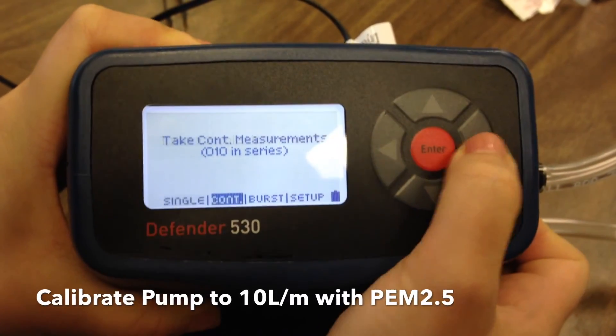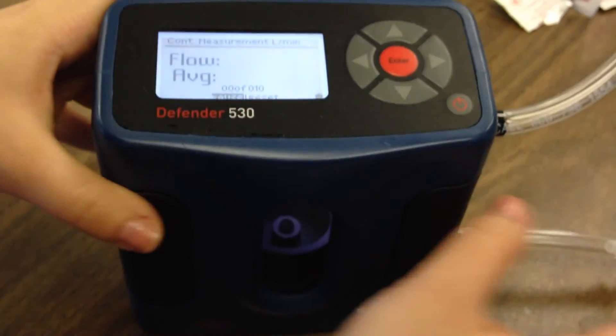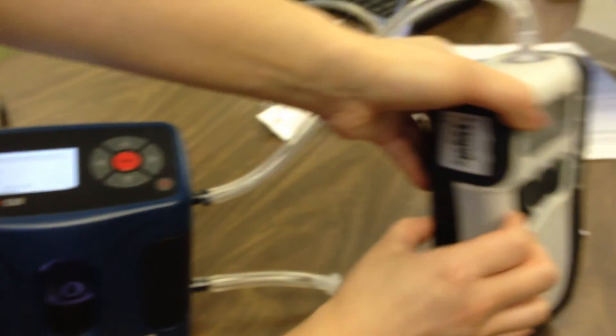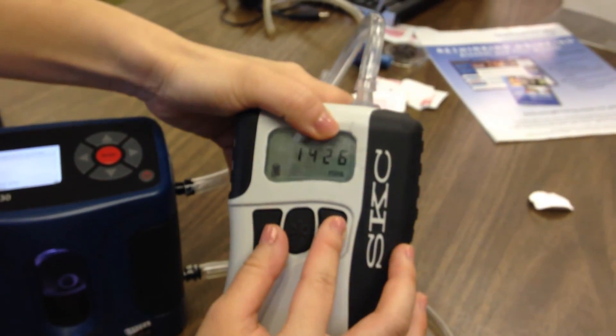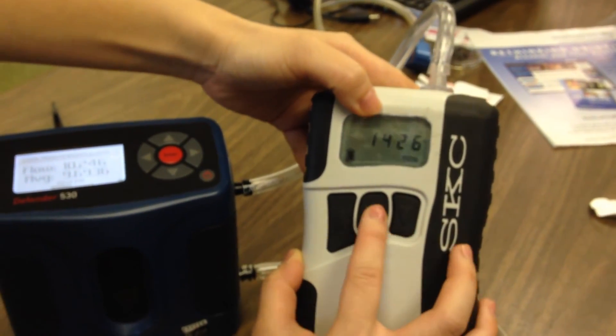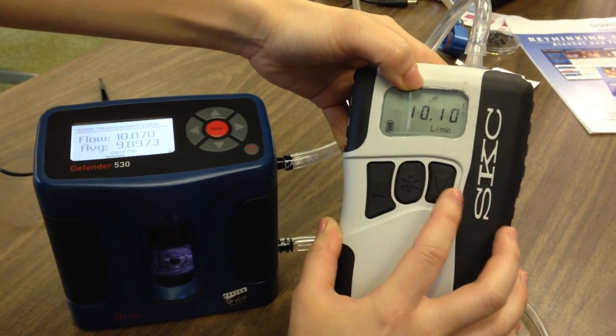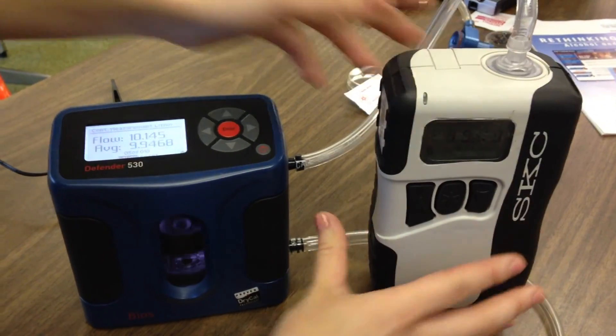In order to calibrate your pump, select Measure, then Continuous Measurement on the calibrator to begin measuring airflow. Connect tubing directly from the pump to the outlet at top and tubing from your PEM cut point to the inlet at the bottom of the calibrator. Leave your calibrator running for 5-10 minutes.